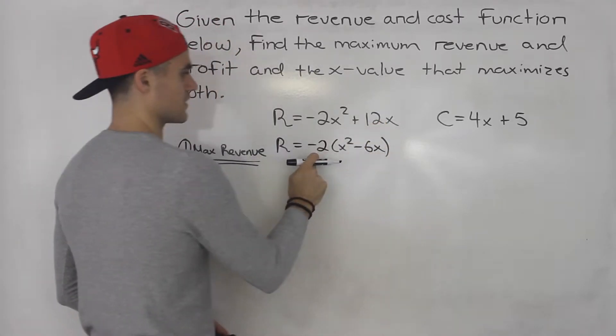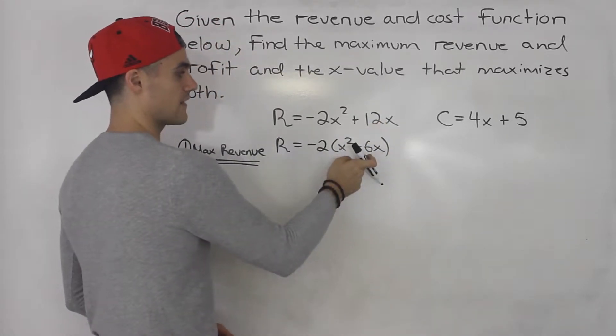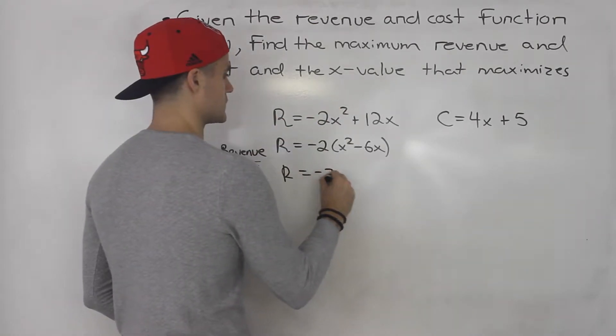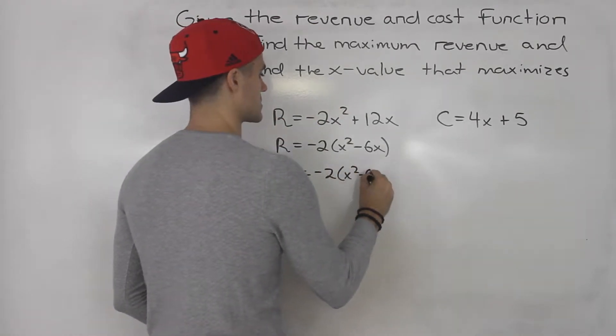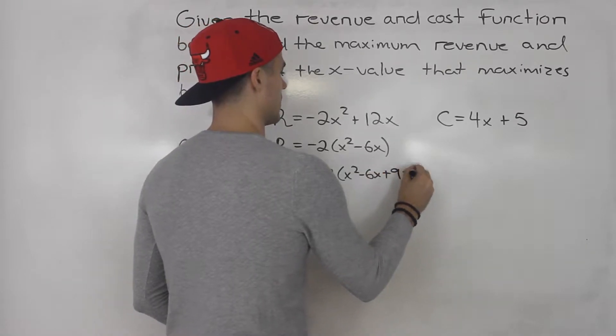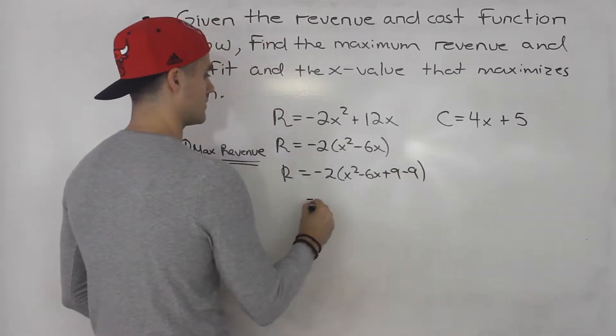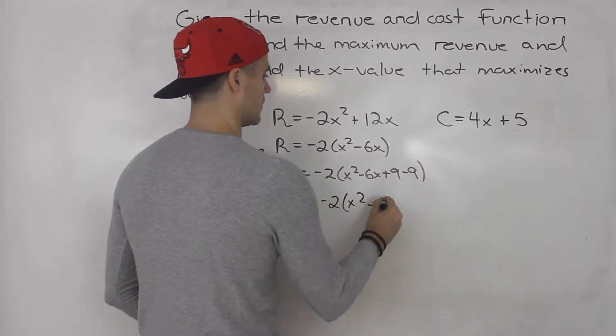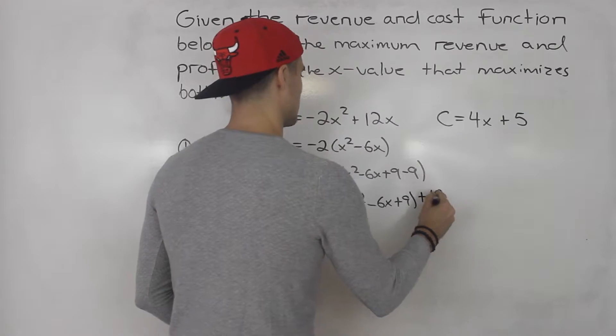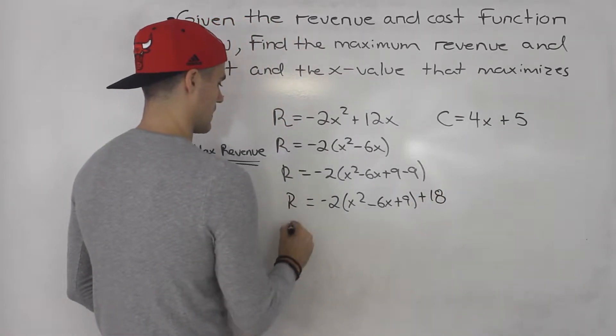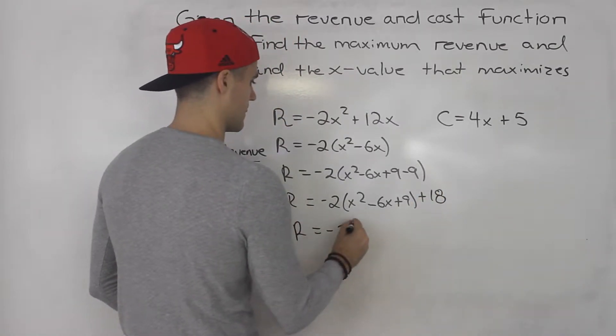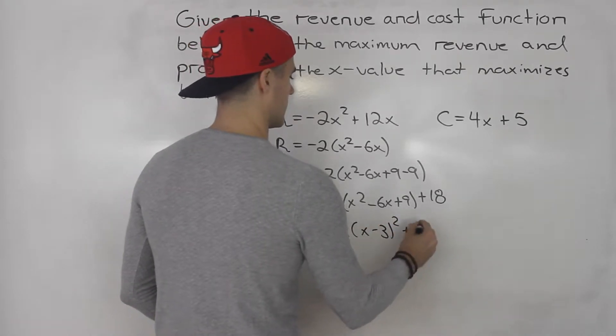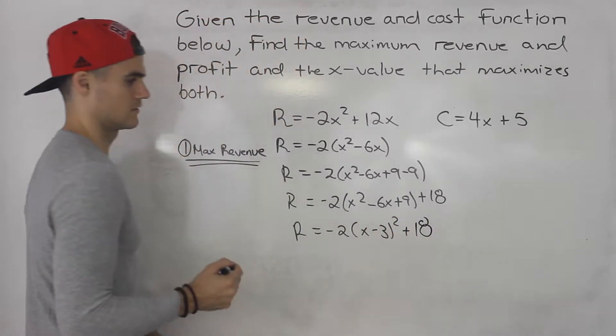Positive 12x divided by negative 2 gives us negative 6x. Divide that by 2, negative 3 squared gives us 9. So we have negative 2 times x squared minus 6x plus 9 minus 9. Take out the negative 9, multiply it by negative 2, which would give us positive 18.